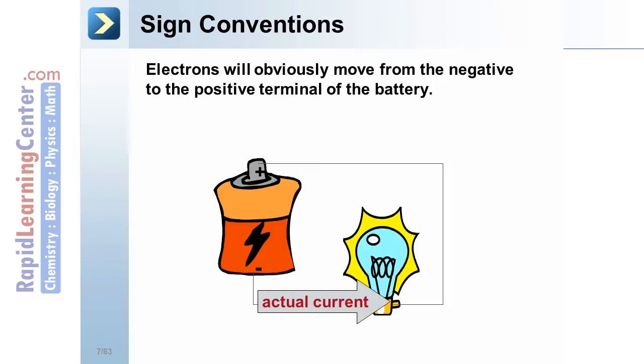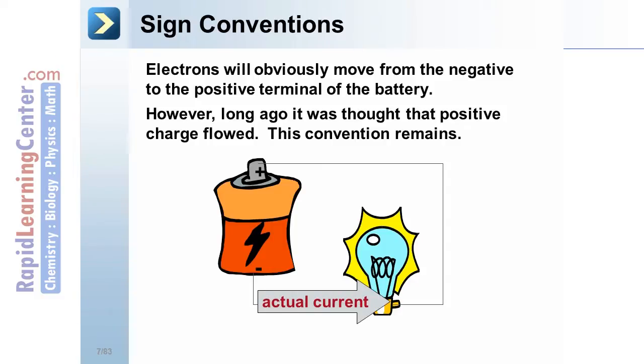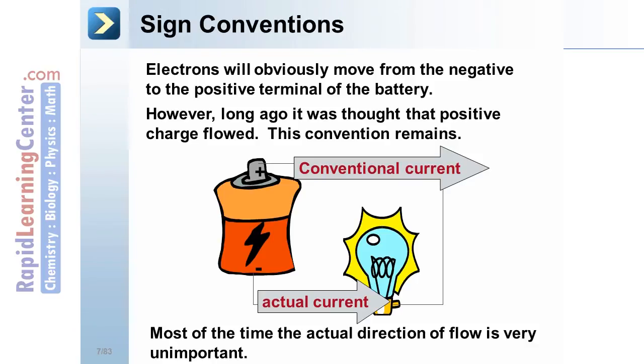However, long ago it was thought that positive charge flowed. This convention remains today. So, conventional current is usually described as moving from positive to negative. This is the direction that we typically use. Most of the time, the actual direction of current flow is really unimportant.